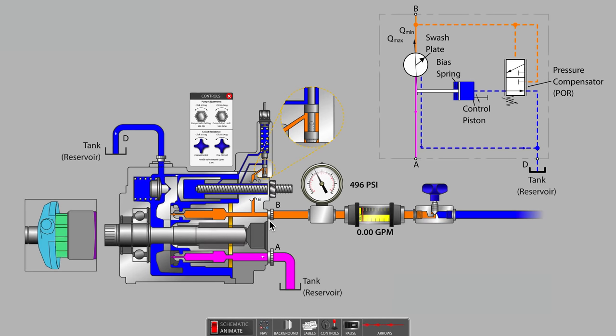The pressure compensated pump is also referred to as a variable displacement pump. When there is no flow path, as is the case with our closed needle valve, the pump simply resizes itself to produce near zero flow.